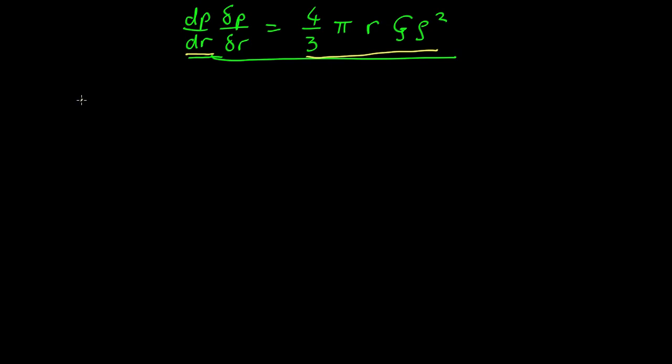So if we have d pressure by dr equals minus (so that as r increases pressure goes down), we've got d pressure by dr. What we now need to do is work out what the central pressure is. So if we know the differential we want the actual value, we're going to have to integrate.